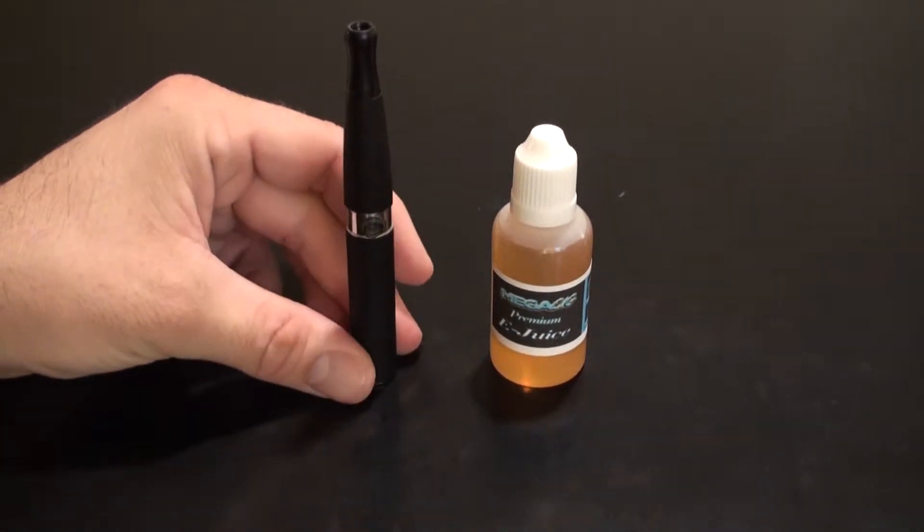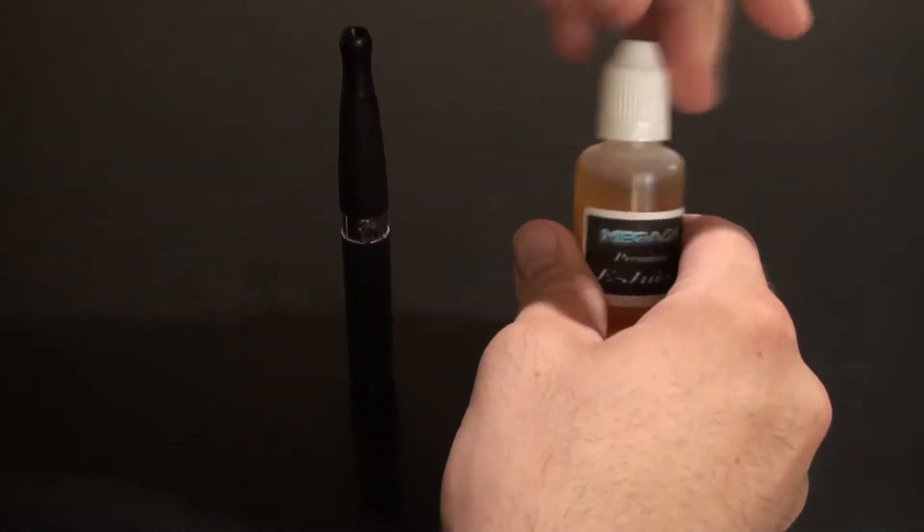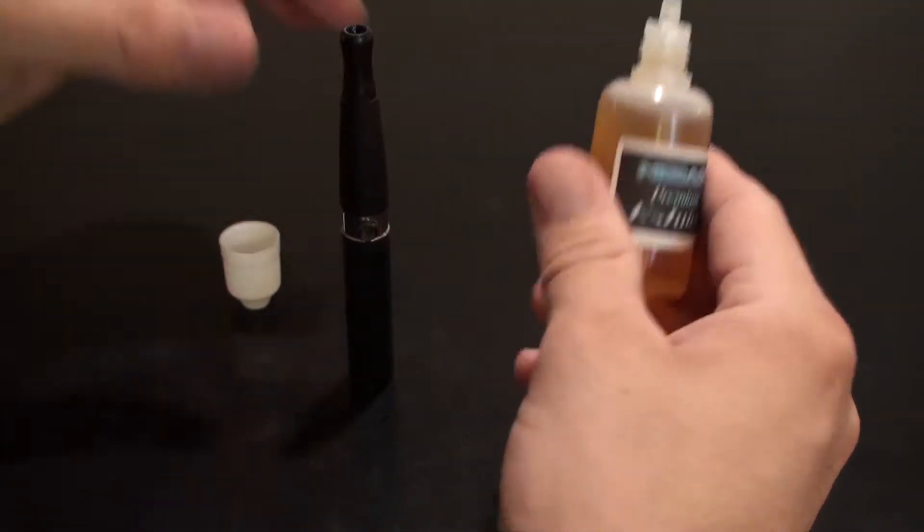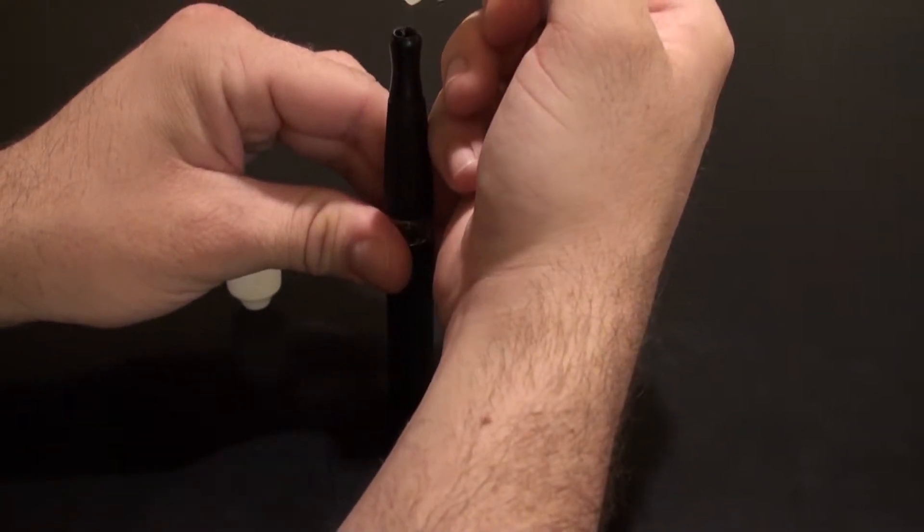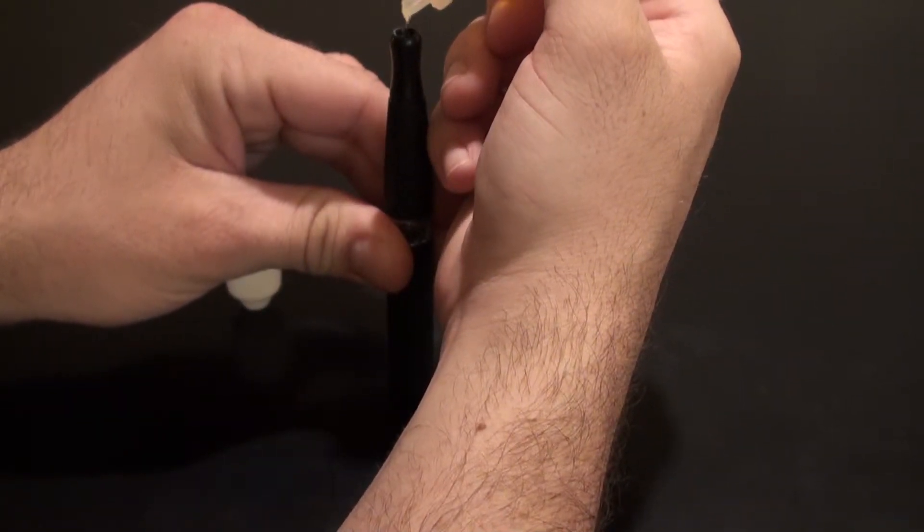Then take your Megasig Premium E-Juice flavor of your choosing, remove the cap, and drip three drops into the top of the drip tip: one, two, three.